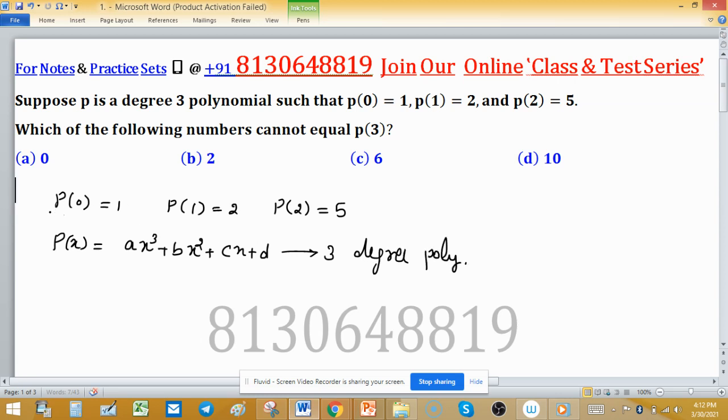Now put these conditions one by one. P(0) is 1, so all 3 first terms will be 0, so D is 1. P(1) is 2, means A + B + C + D is 2, call this equation 1. And P(2) is 5, so 8A + 4B + 2C + D, this is equation 2.